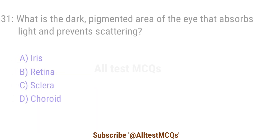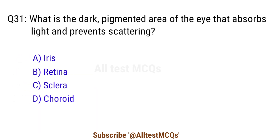Question 31. What is the dark pigmented area of the eye that absorbs light and prevents light scattering? The right answer is option D. Choroid.